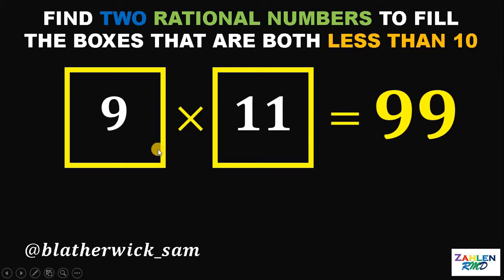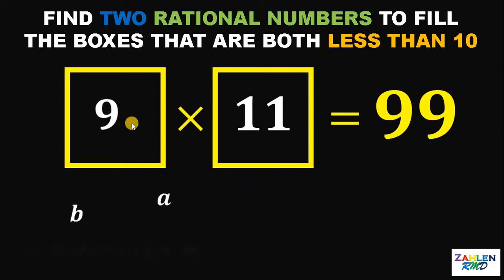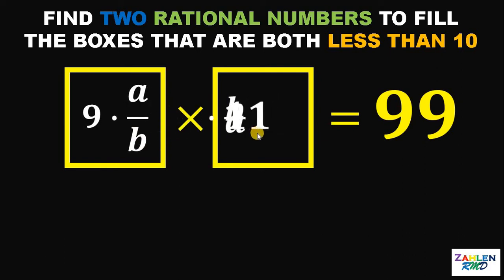So what we're going to do is multiply this 9 by A over B. And to cancel out this fraction, let's multiply this 11 by its reciprocal, which is B over A. Take note that 9 times A over B times 11 times B over A is just 99 because we can cancel out this A and we can cancel out this B.